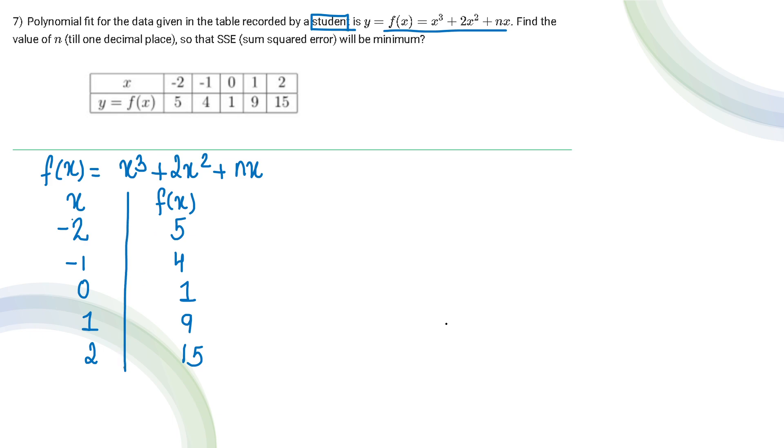Now let's understand one thing. When you put x = 0 in this expression, we will get f(x) = 0. But according to the student, at x = 0, we have f(x) = 1, which is obviously wrong. Therefore, the student has done some errors while calculating. The question is asking: what must be the value of n so that we get the minimum sum squared error?